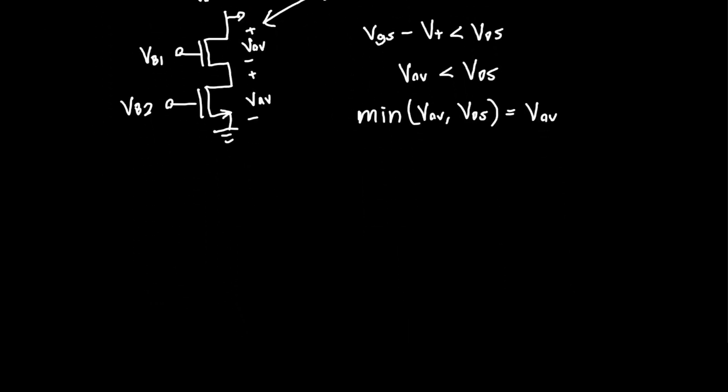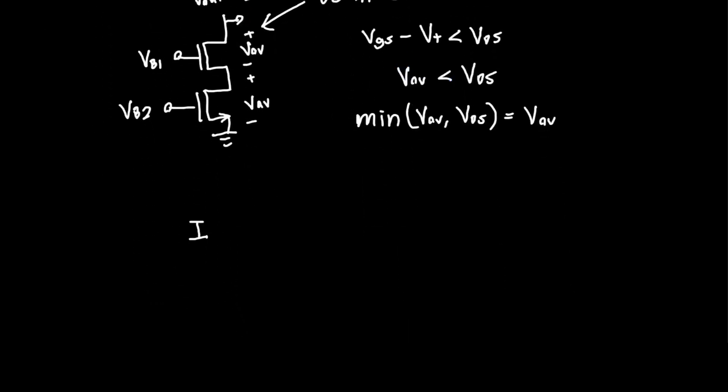It's also extremely convenient if you want to relate the current, the drain current of a MOSFET to a voltage. Because if we move some variables over to the other side and we take a square root, we'll see that the overdrive voltage is just equal to 2ID divided by KN. And this is a simple relationship, it's elegant, and it's incredibly useful. It's useful for designing things.